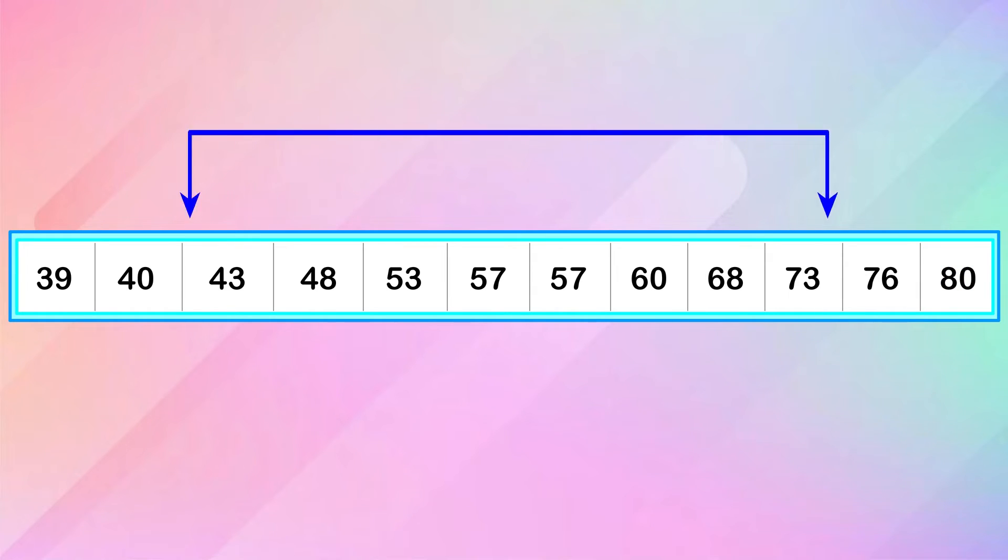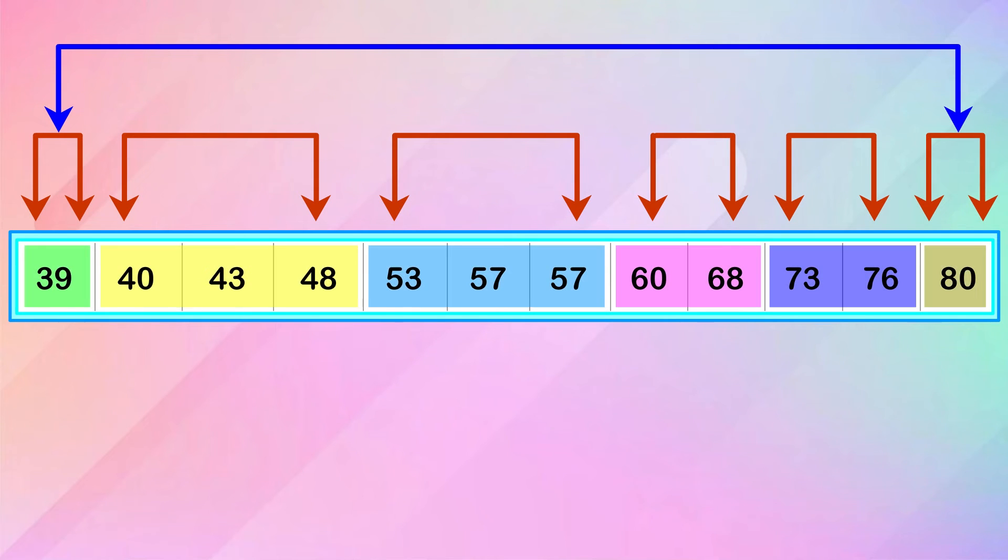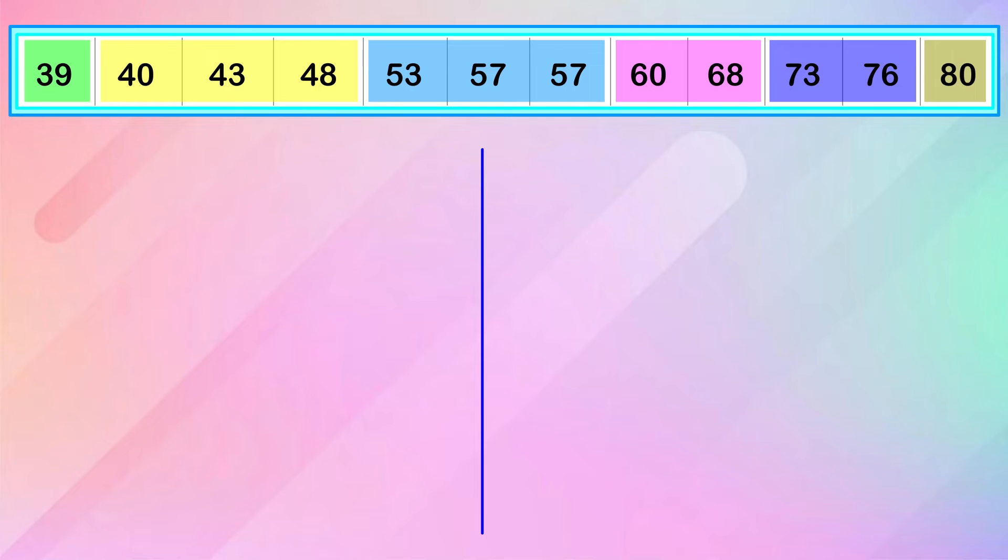The next step is for us to identify the stems. Based on the range of 39 to 80, we need 6 stems. We'll draw a vertical line and list the stems on the left side of the line.